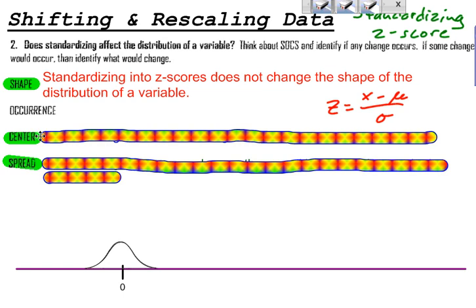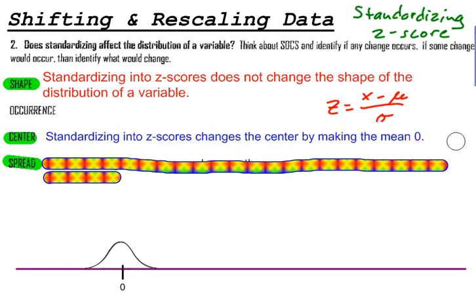Well, what about the center? When I standardize into z-scores, the center changes by making the mean zero. So if we had a mean like we had for the Ewoks and the Wookiees, which were in the positives, I think the mean for the mean height of a Wookiee was 85.5 inches tall. Well, when I standardize things, it takes the center of the distribution and moves it from 85.5, which is way over here, and moves it to zero.